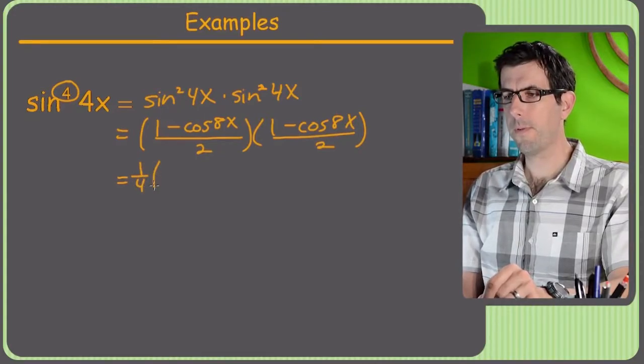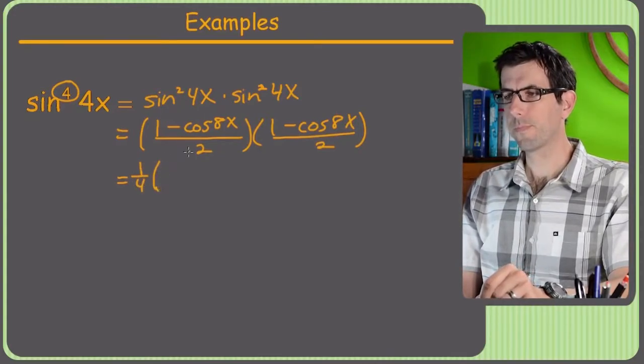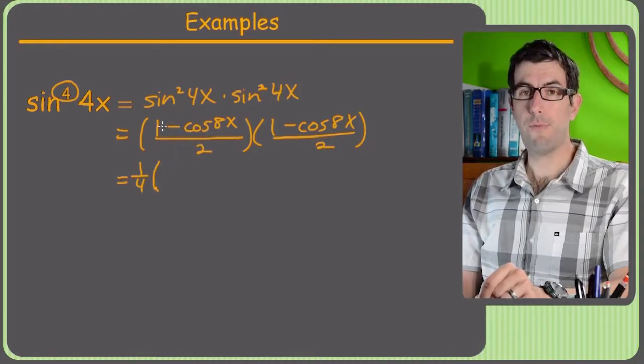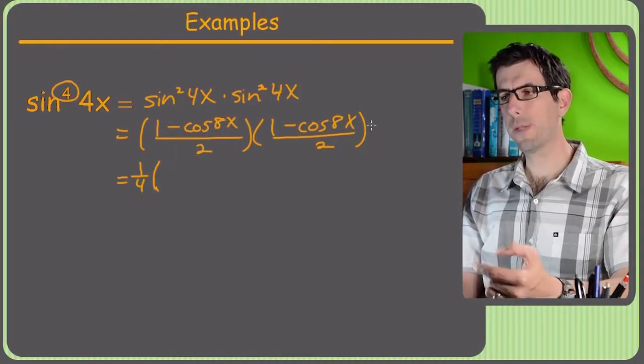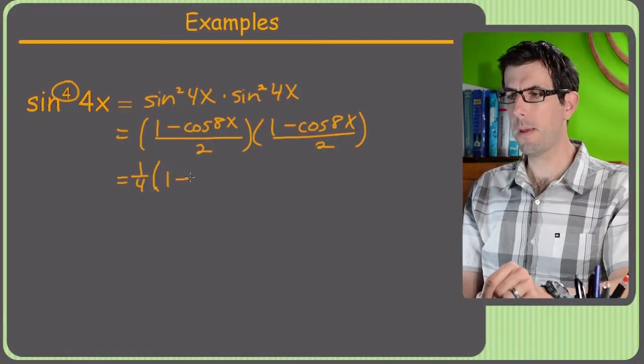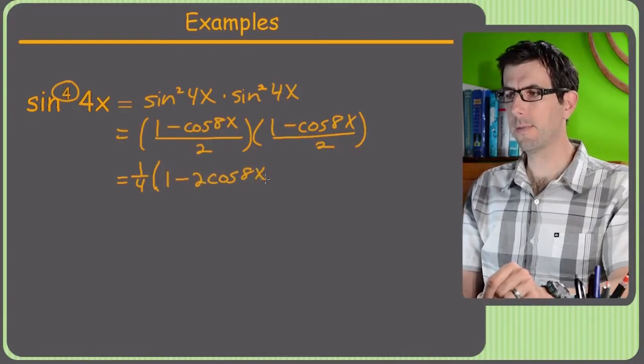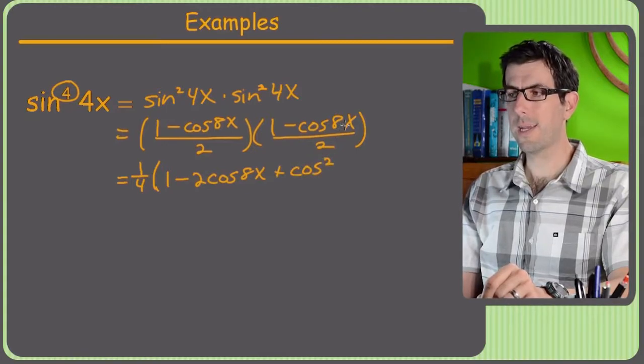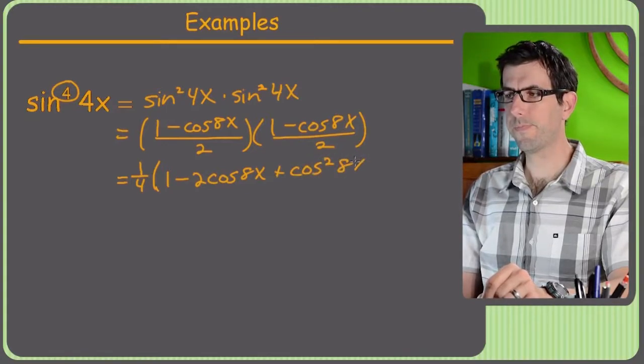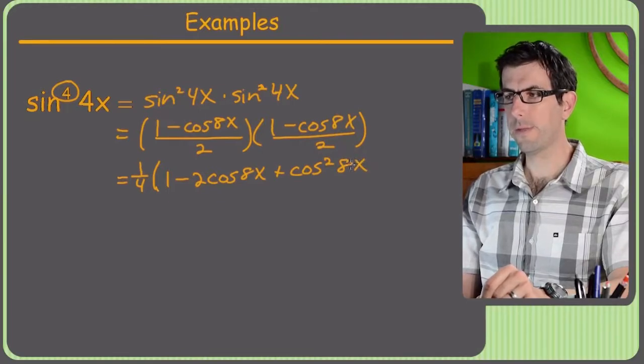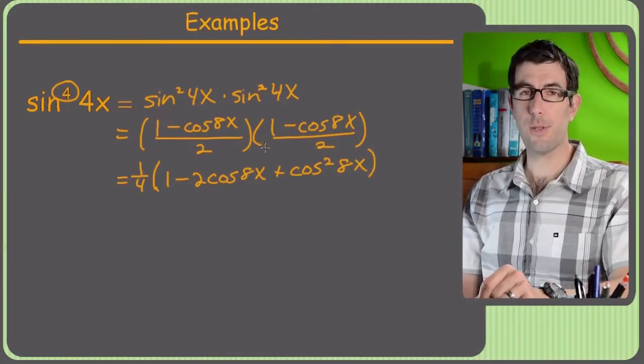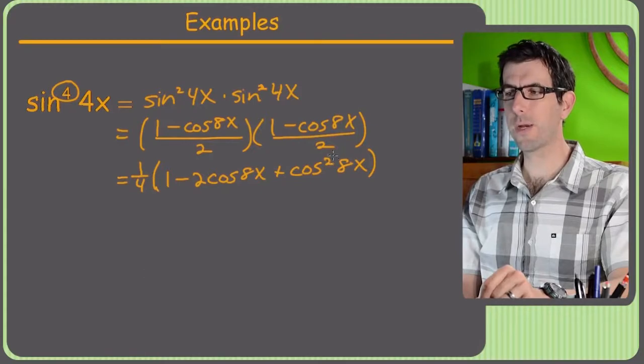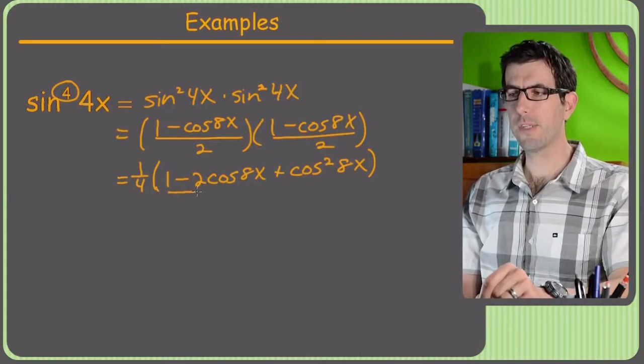So I'll get 1 fourth. And then now I just need to FOIL 1 minus cosine 8x times 1 minus cosine 8x. So that's going to give me 1 minus 2 cosine 8x plus cosine squared 8x. All right.